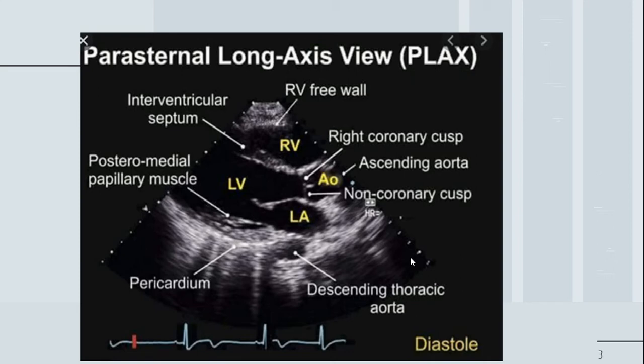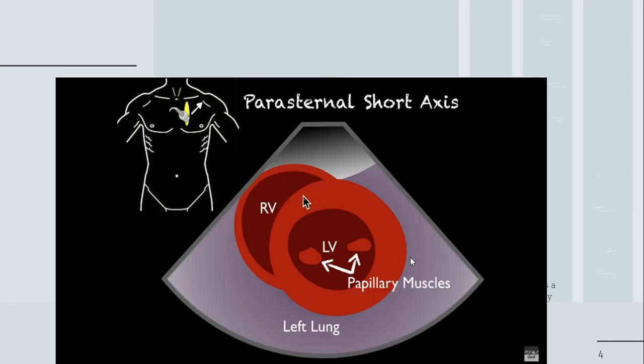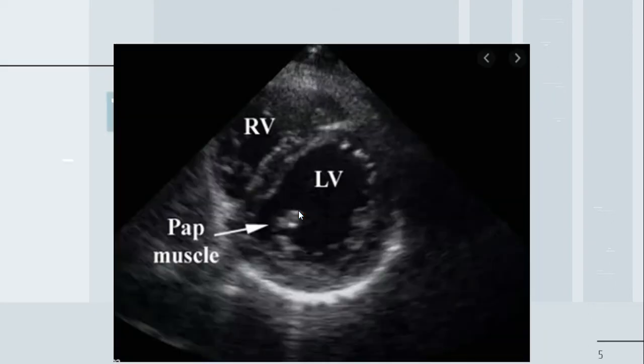Next we have the parasternal short axis view. In this view, you can see how the probe has changed position, and you can identify the right ventricle, left ventricle, and papillary muscles. This is a different view of the heart, and here is a real ultrasound image showing the same structures: right ventricle, left ventricle, and papillary muscles.